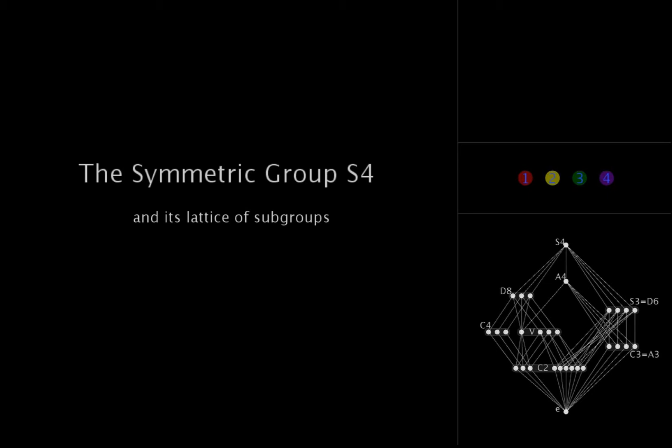In this video, we'll look at the permutation group S4 and its lattice of subgroups. This group consists of the 4 factorial possible permutations of 4 objects, and although this might not be immediately obvious, it also happens to be isomorphic to the group of symmetries of the cube.